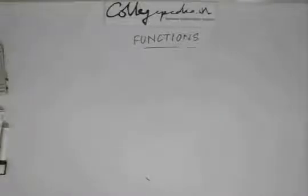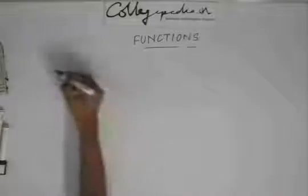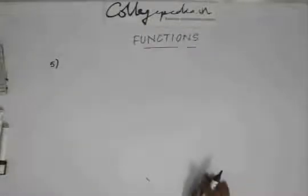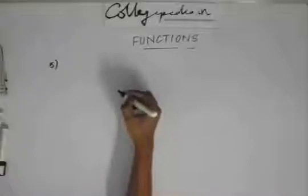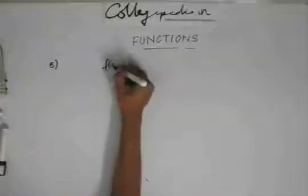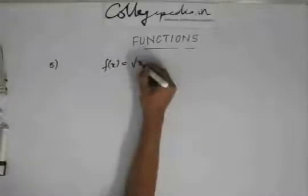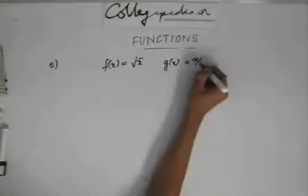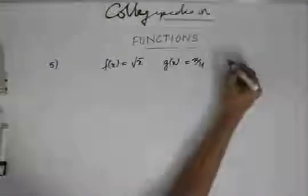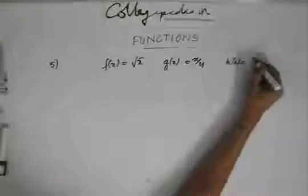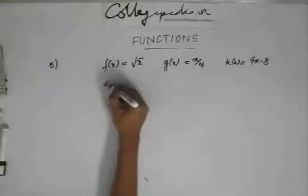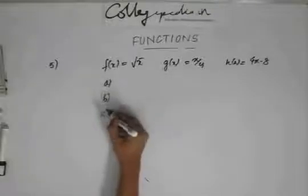Now we move on to the fifth question. There is a function f(x) given by root of x, a function g(x) given by x plus 4, and a function h(x) given by 4x minus 8. There are four options and we have to see which option is correct.